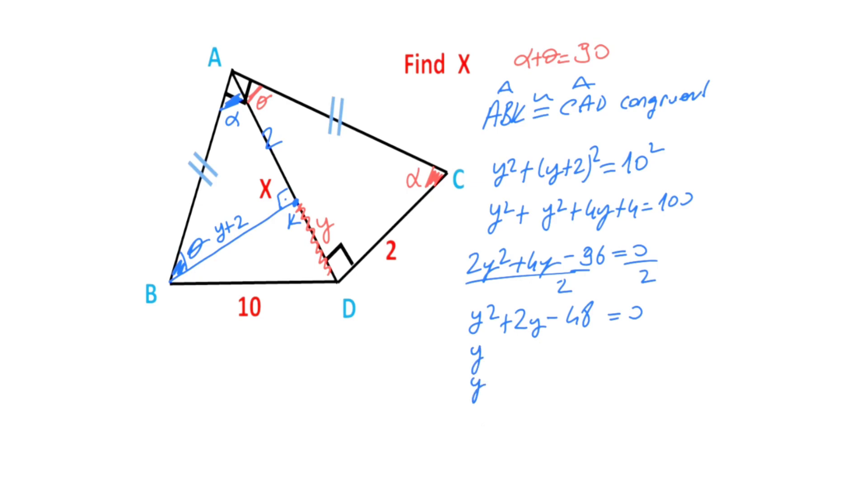y squared plus 2y minus 48 equals 0. Let's separate: y times y and 6 minus 6 and 8. Therefore, (y minus 6) times (y plus 8) equals 0. Therefore, y equals 6 and y equals minus 8. We know that length cannot be negative. Therefore, y equals 6.